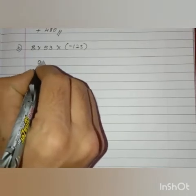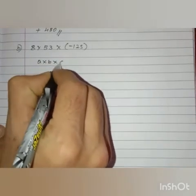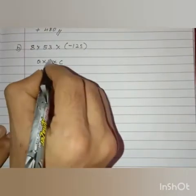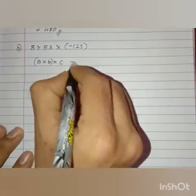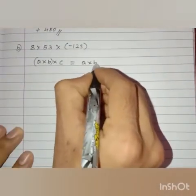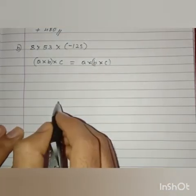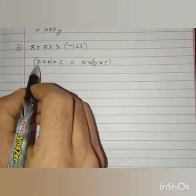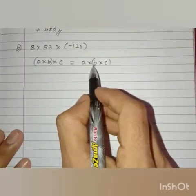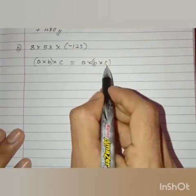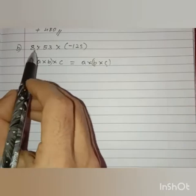That is a into b into c, right? A into b into c is equals to a into b into c. So, we can group here first and second term in the right hand side, second and third term. Let us rearrange the terms here.